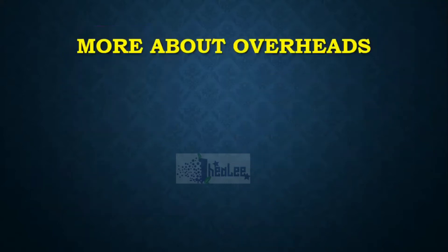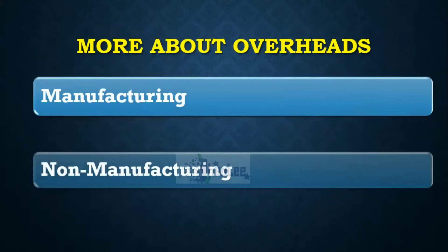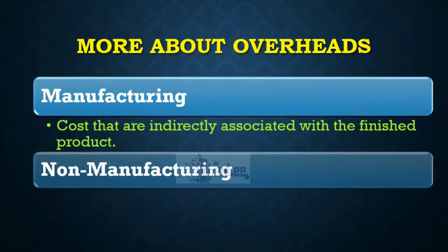Overheads can be manufacturing or non-manufacturing. Manufacturing overheads are the costs that are indirectly associated with the finished product — costs you cannot trace directly to the item that you have produced.